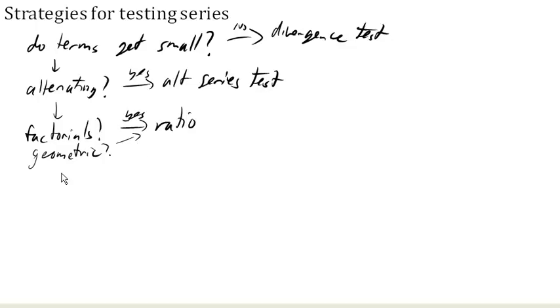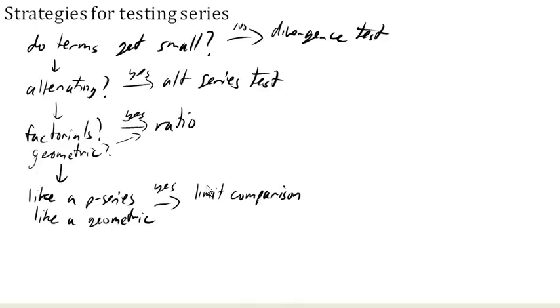So if not, then we can look at it further and say, is it like a p-series, or is it like a geometric series, but maybe it has an extra term in there, or something being added. If the answer is yes there, then we can go to the limit comparison test. Or if you really wanted to, you could use the direct comparison test also.